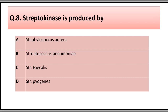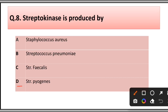Question number eight: Streptokinase is produced by: A) Staphylococcus aureus, B) Staphylococcus pneumoniae, C) Staphylococcus faecalis, D) Staphylococcus pyogenes. The correct answer is option D, Staphylococcus pyogenes.